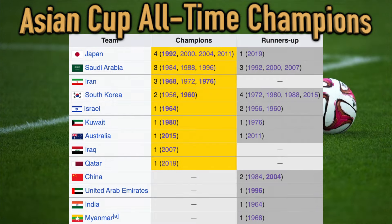Here's a quick look at all the teams that have made at least one final at the AFC Asian Cup as of 2024. Japan is the all-time leader in titles with four — they've been the clear best team especially since the turn of the millennium. Saudi Arabia, Iran, and South Korea all have multiple trophies as well.